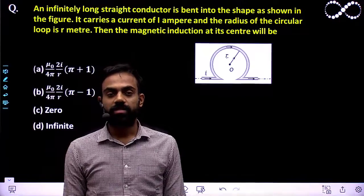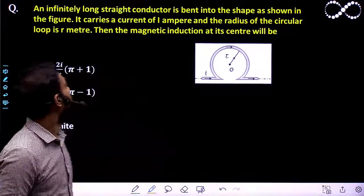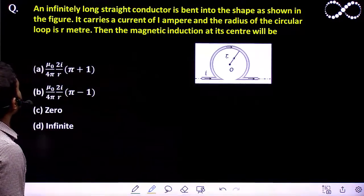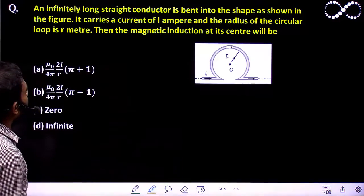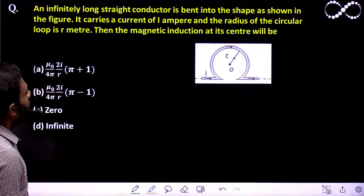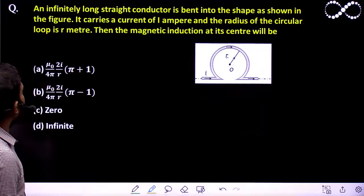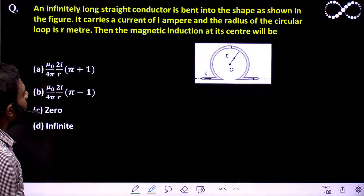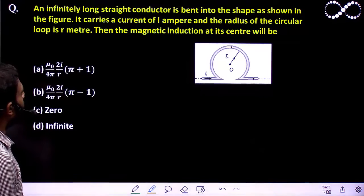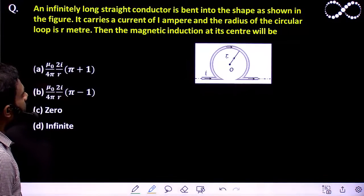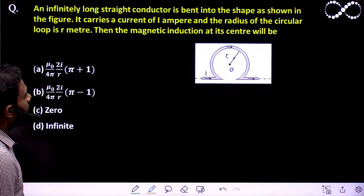Hello students. Let us see this question here. An infinitely long straight conductor is bent into the shape as shown in the figure. It carries a current I ampere and the radius of the circular loop is R. Then the magnetic induction at its center will be?